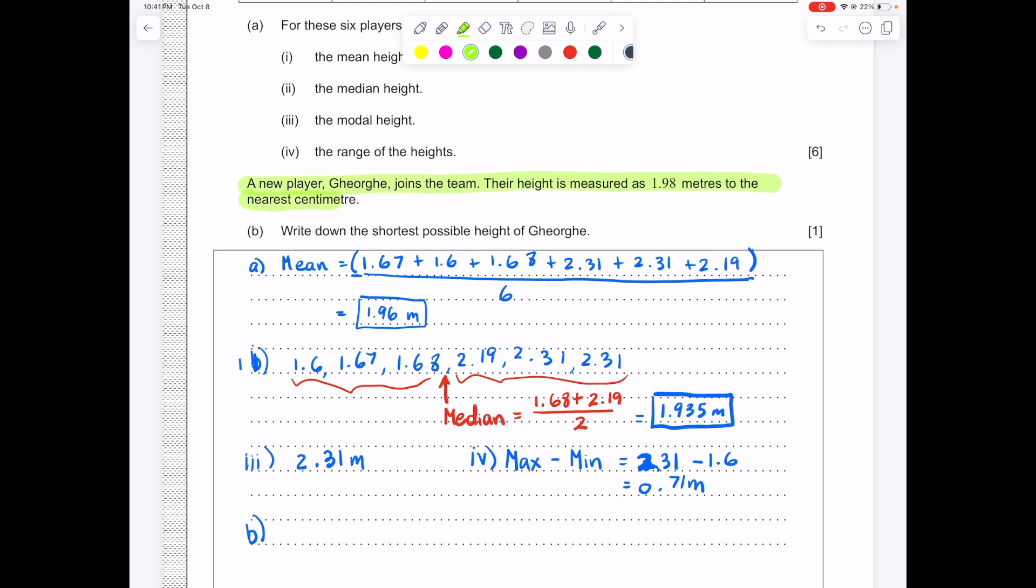And the question is asking, what's the smallest possible number that could round to that? We want this number to round to 1.98. So it's probably 1 point something smaller because it can round up. So it's going to be 1.97 point something.